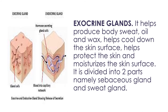Exocrine glands help reduce body sweat, oil, and wax. They help cool down the skin surface, protect the skin, and moisturize the skin surface. The exocrine glands are divided into two parts: sebaceous glands and sweat glands. These glands open through pores in the skin to release unwanted substances and help maintain the body's fluid balance.